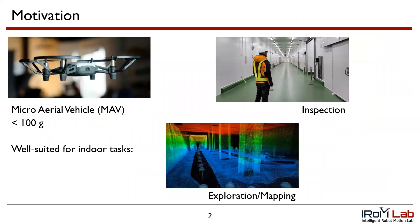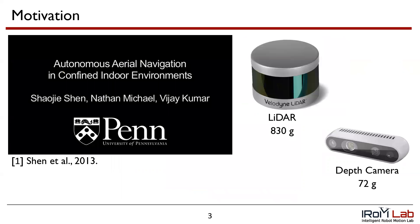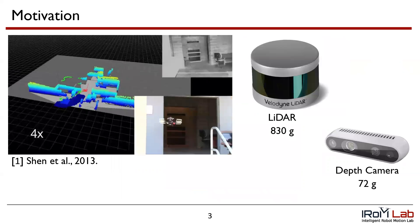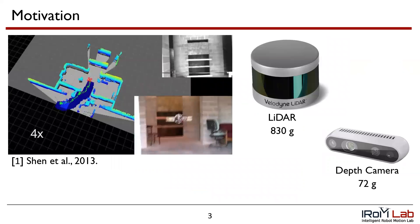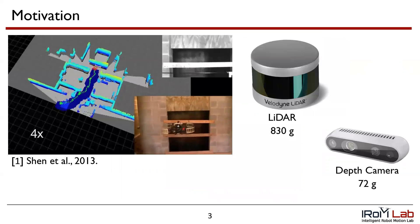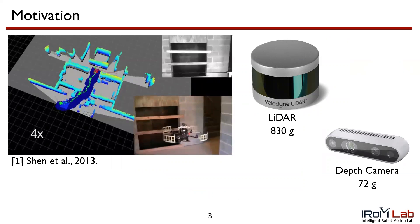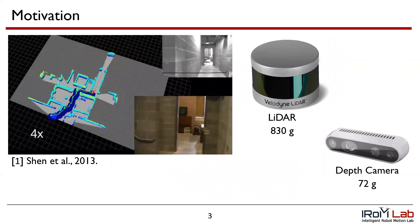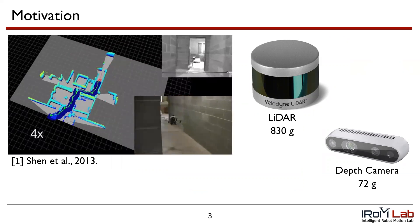The smallest class of unmanned aerial vehicles — micro-aerial vehicles, or MAVs — are well suited for tasks such as inspection, exploration, and mapping in constrained indoor environments due to their small size. When a robot has access to a local map, conventional path planning and trajectory optimization approaches can be used for collision-free navigation towards a goal. To generate such a map online, robots typically use depth sensors such as laser range scanners, LIDAR sensors, or stereo depth cameras to sense the local positions of obstacles.